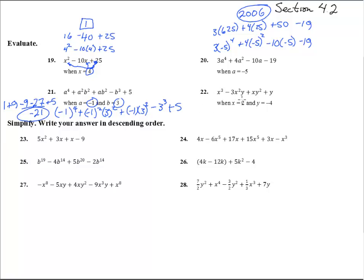Number 22. So 2 goes in for x. So we get 2 cubed minus 3 times 2 squared times negative 4 plus 2 times negative 4 squared plus negative 4. So 2 times 2 times 2, that's 8. We're going to have minus 3 times 4 times 4, negative 4, so that's a plus 48.